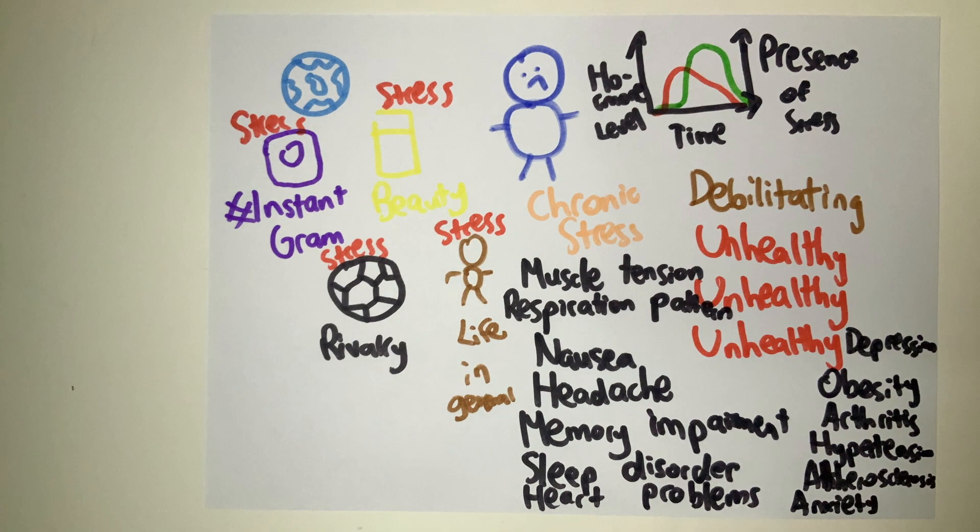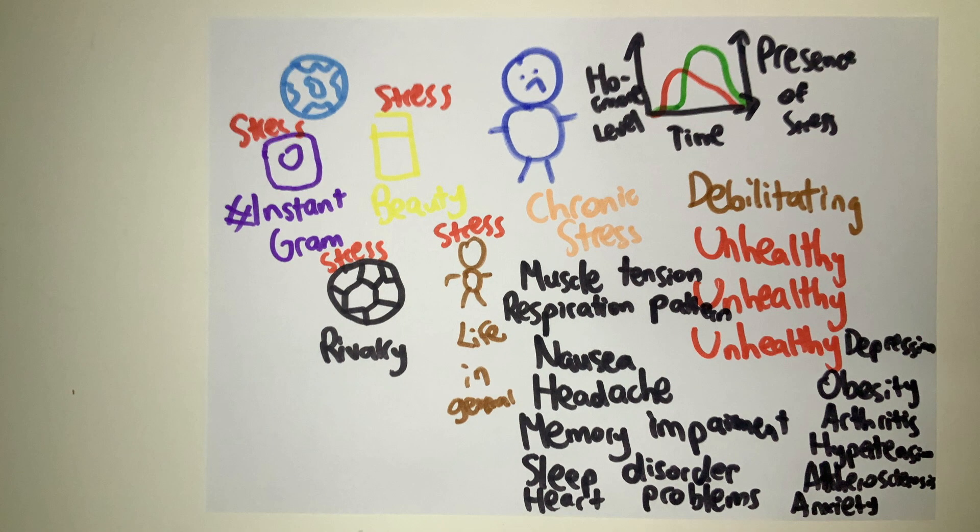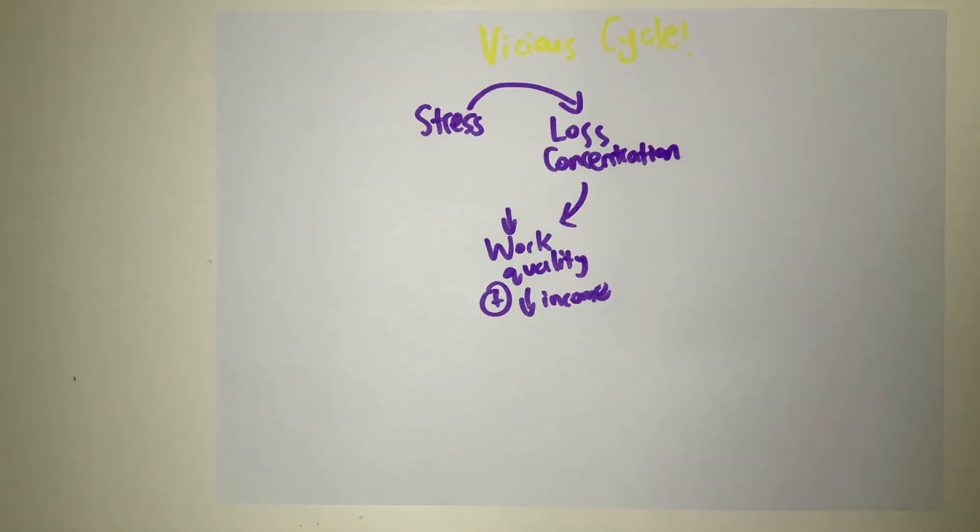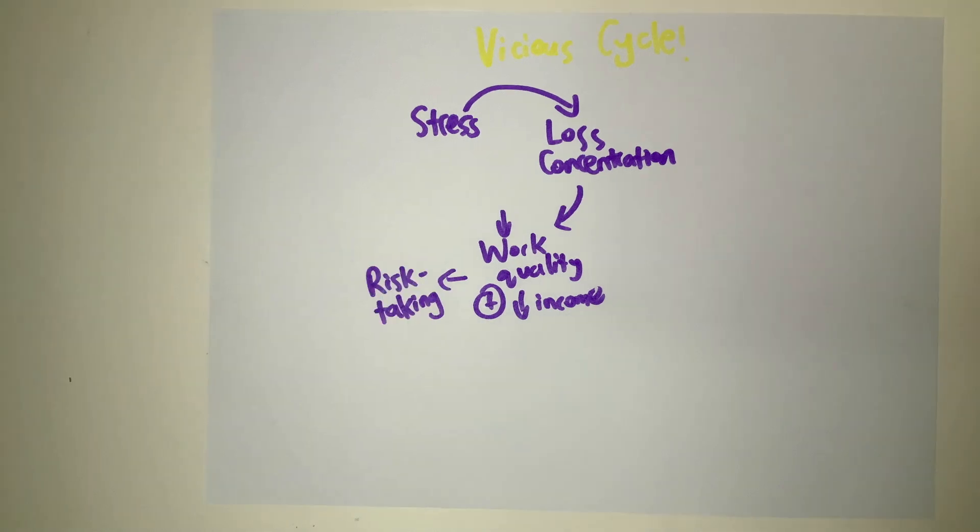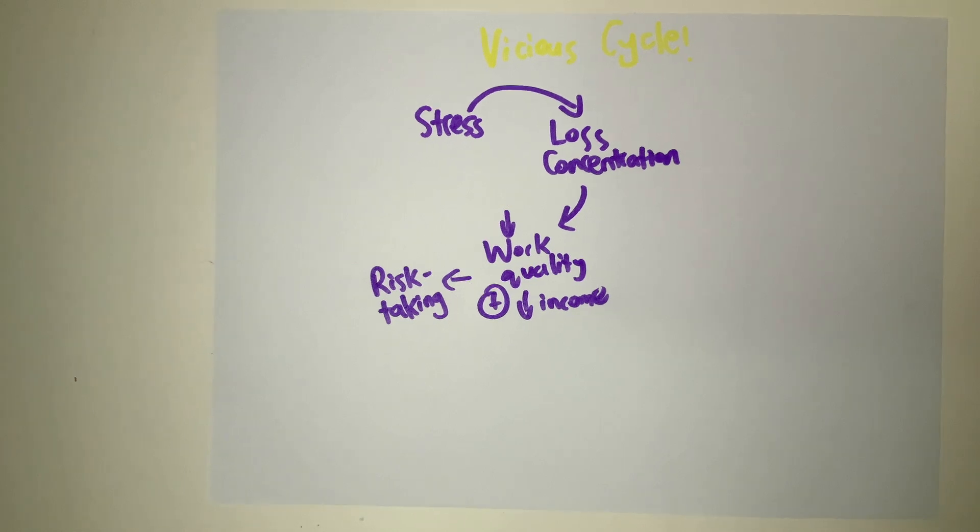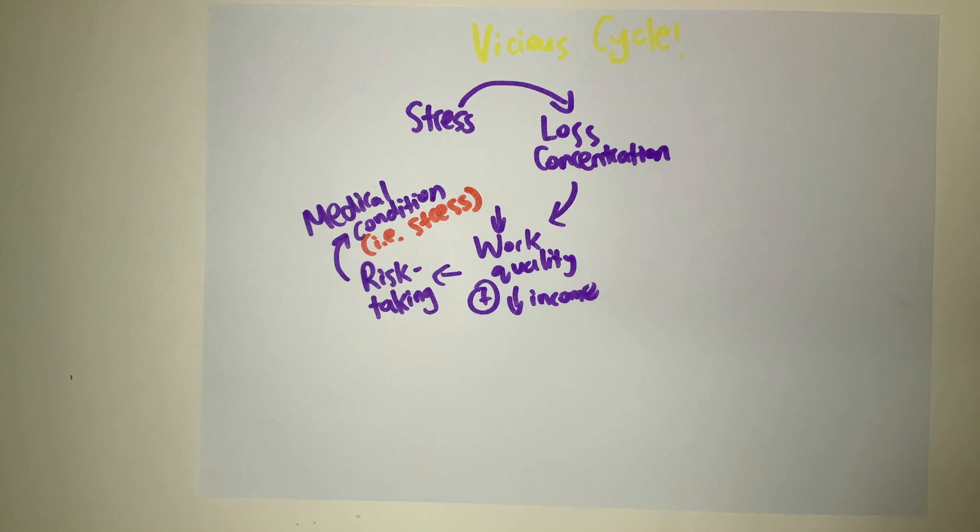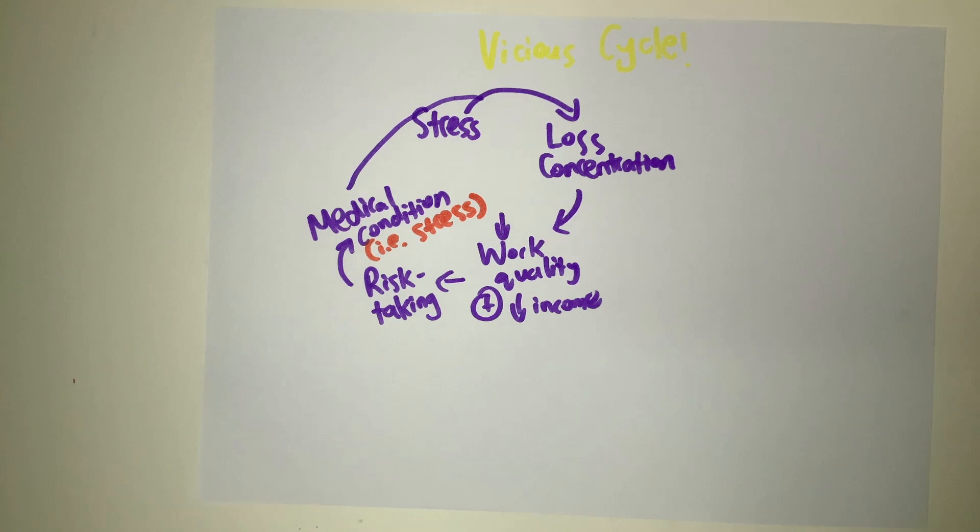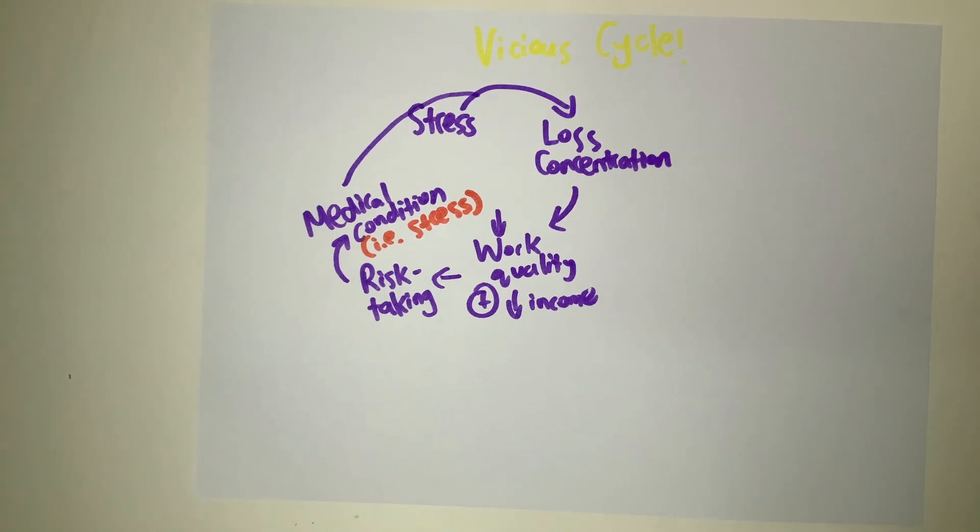The largest problem with chronic stress is that it generates a self-enforcing vicious cycle. The feedback loops go something like this: Constant stress causes people to lose concentration, which decreases work quality, and subsequently, income. Reduced income causes people to become prone to making risky decisions, such as gambling or overdosing on drugs, in order to alleviate the heavy toll on the mind that results from deaths. Conducting these risky actions often lead to a medical condition. In turn, these medical conditions hinder the person from working efficiently, decreasing work quality, and starting the cycle anew.